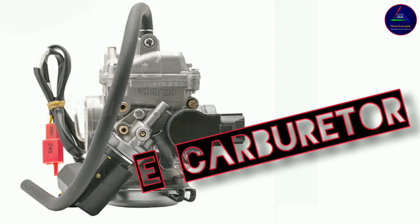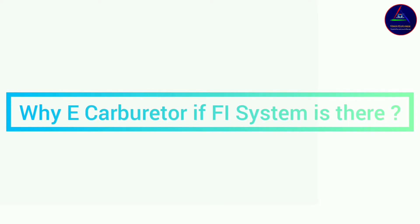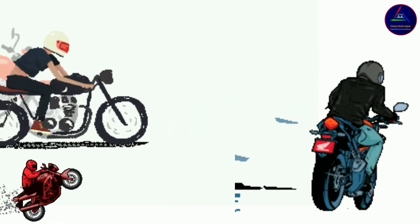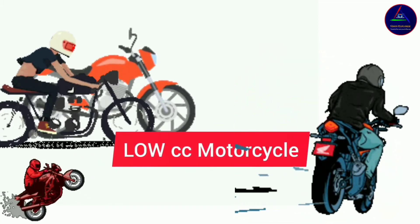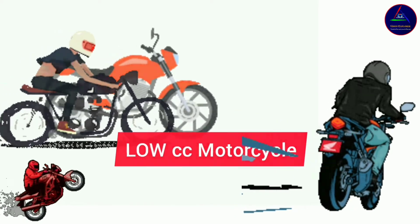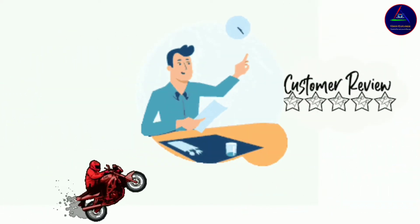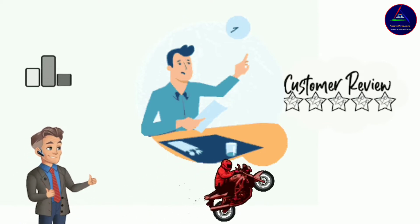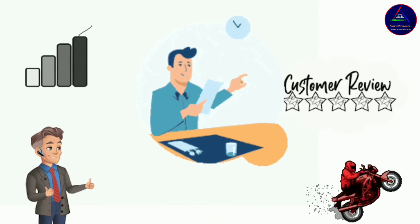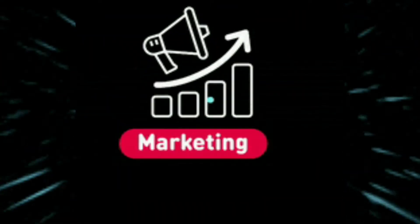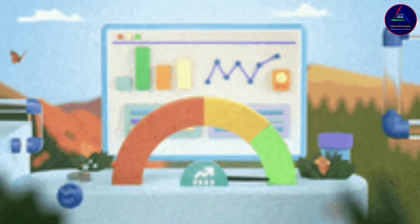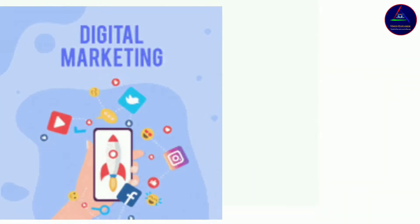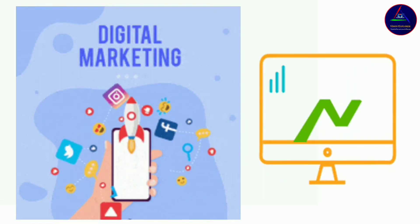Now you might be thinking: if the FI system is already in the market, why do we need an e-carburetor? In India, the e-carburetor is mostly available in low-cc motorcycles to match the BS6 norms. Manufacturers don't want to lose their customers through a huge price hike, which could happen if they go for a full FI system — as is done for 150cc or above 200cc bikes. So to remain competitive, the e-carburetor is a better choice as it is more affordable compared to the FI system for motorcycles. That was the marketing strategy reason for the e-carburetor.